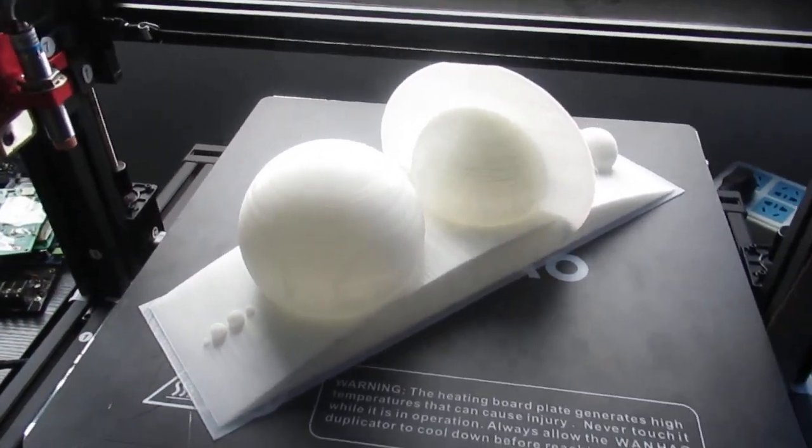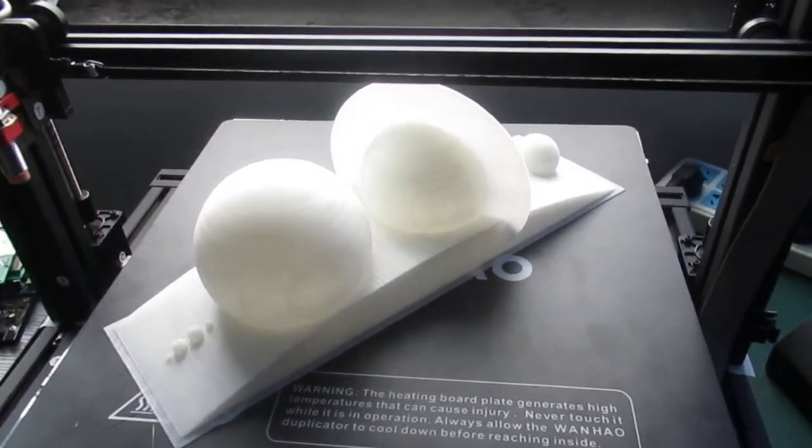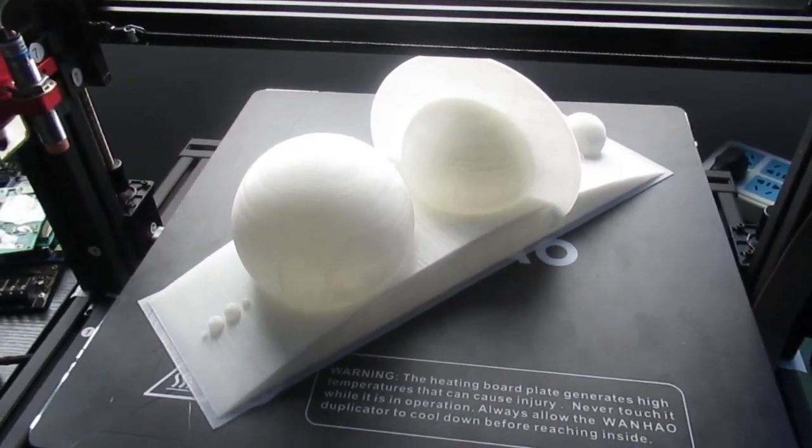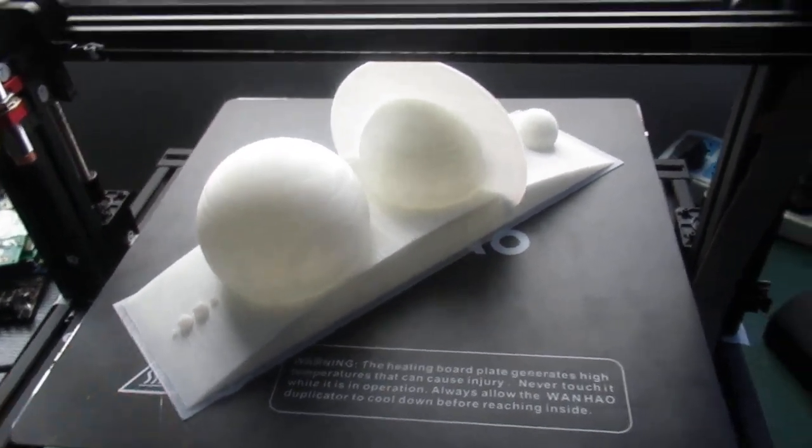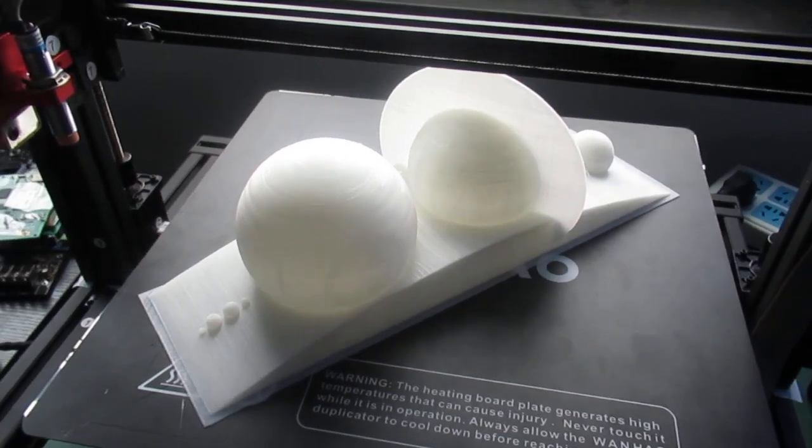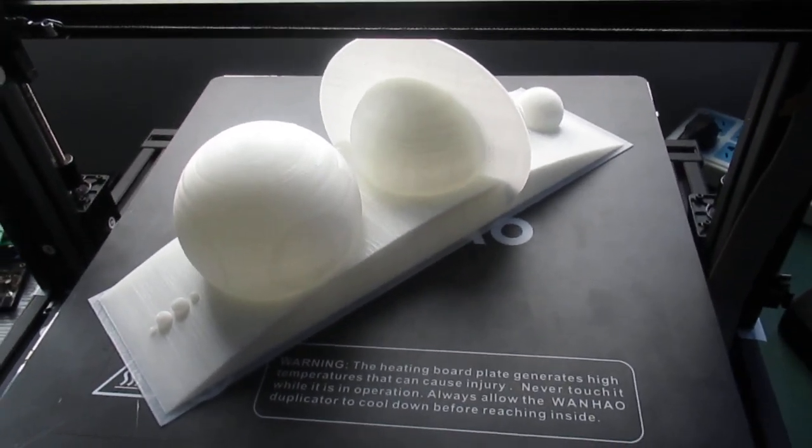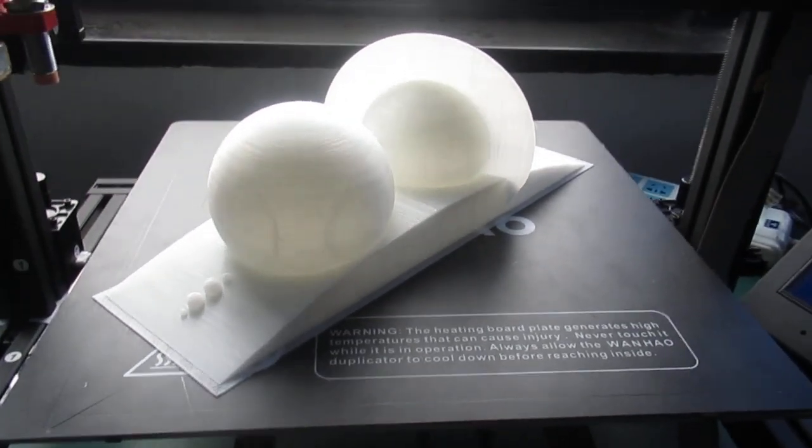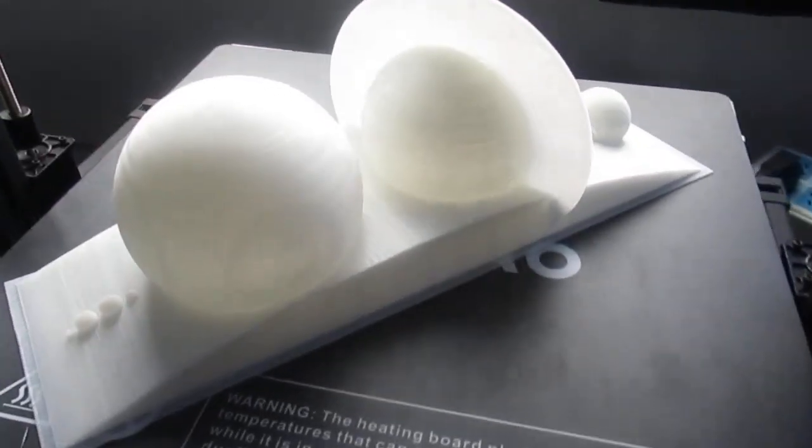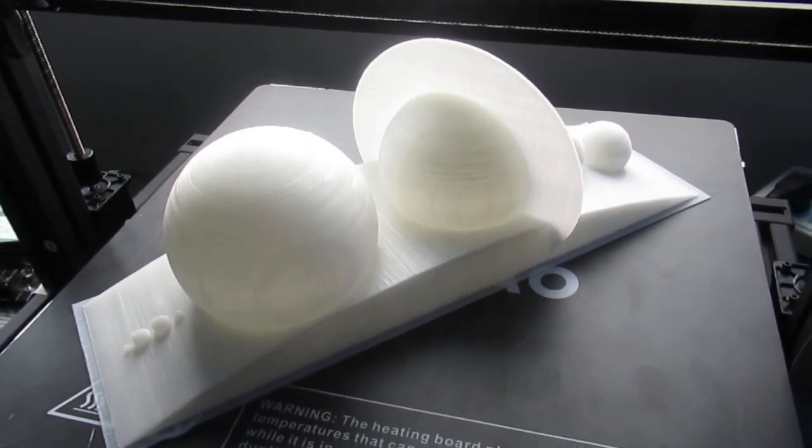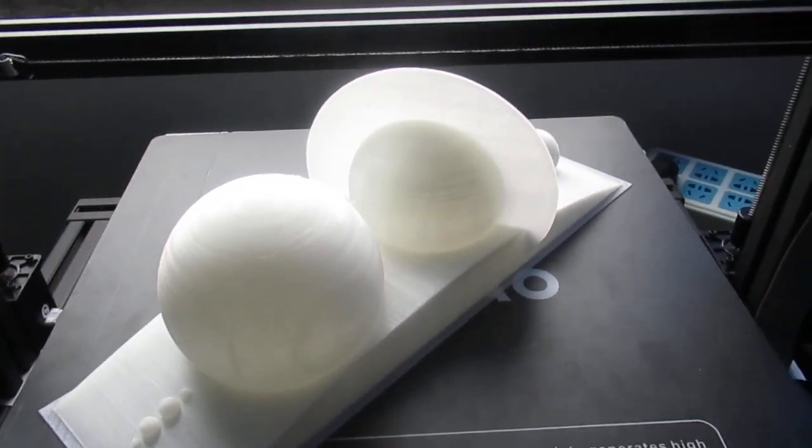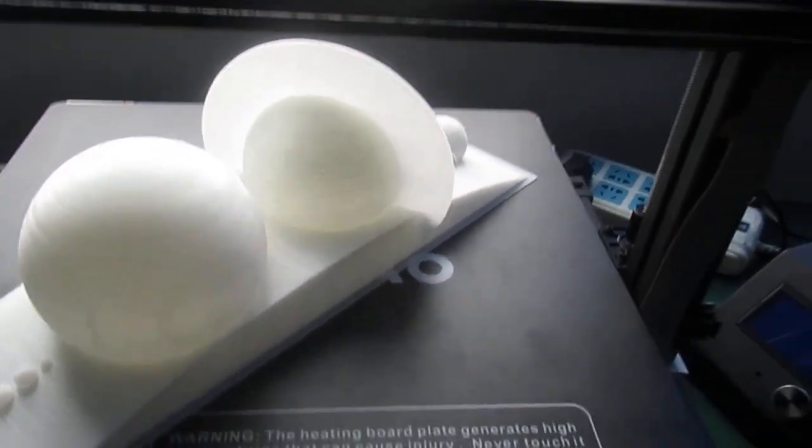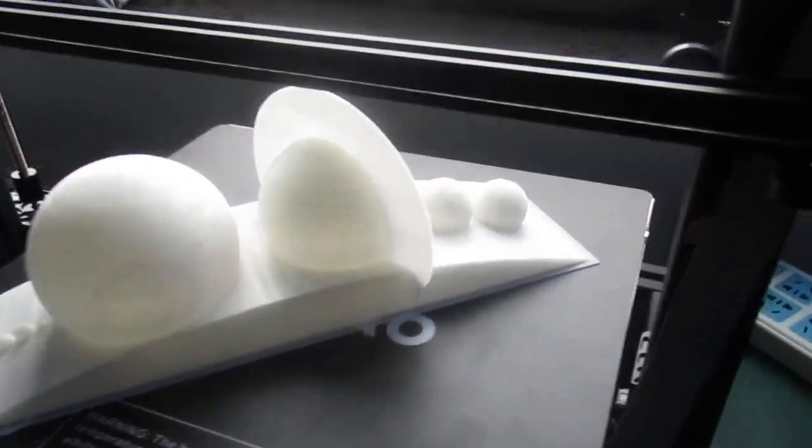This is my solar system I printed on Duplicator 9. I downloaded the model from Thingiverse and as you see it did a really good job. I think it took me roughly two days to finish this.